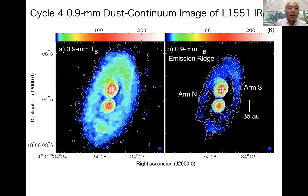Let me show our results. First, this figure shows the 0.9 mm dust continuum image of L1551-IRS5. There are two panels — both show the same thing but with different contour levels. You can see two circumstellar disks associated with individual protostars. Around this binary you see a structure of the circumbinary disk. There are arm-like features extending from the north-east to the northern binary star — we call this source N — and from source S the other spiral arm is seen.